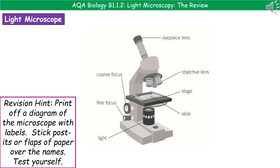So that's the only bit that changes. Everything else will be the same no matter what the source of light, and you need to be able to label or recognize these different parts of the light microscope. A little revision hint: print it off and stick post-it notes or little flaps of paper over the names so you can test yourself over and over again. The key parts are: the eyepiece lens, which is the one you look through; the objective lens, which is the one you can twist to change; the stage, where we put our slide; and then the two focusing dials — the coarse focus and the fine focus.